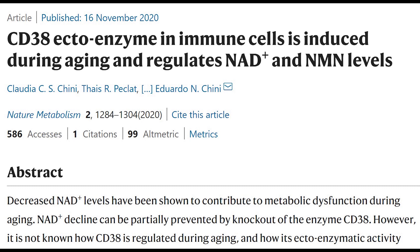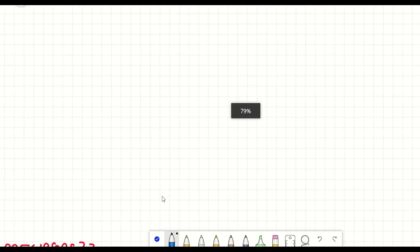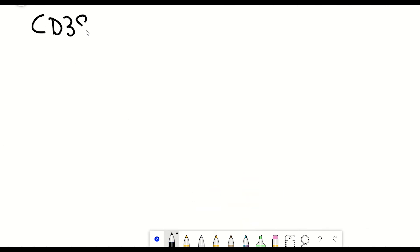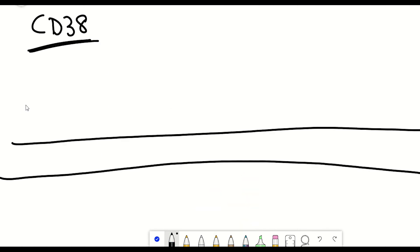However, in the second paper they focus a little bit more on the receptor, which is CD38, and how the NAD levels change when the CD38 is inhibited.